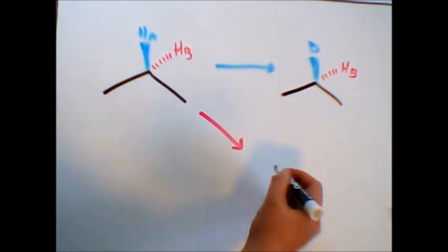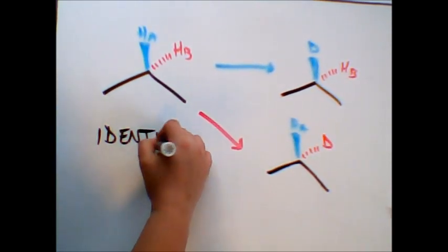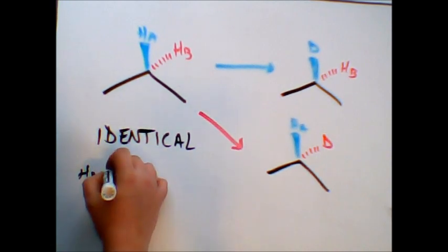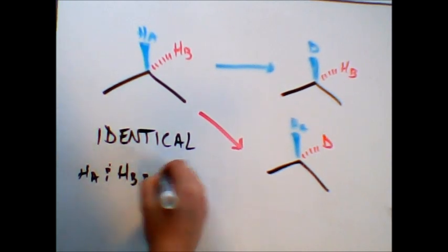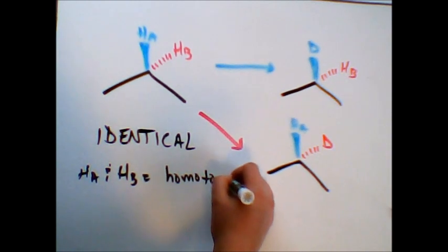we see that the two resulting structures are achiral and therefore identical. This means that HA and HB are homotopic, which means that they will react identically in chemical reactions and will show up identically in terms of spectroscopy.